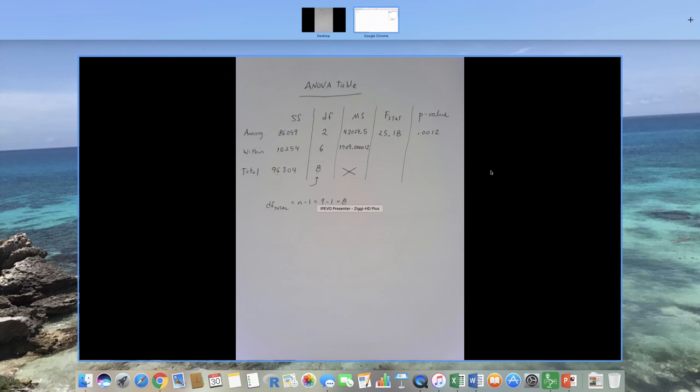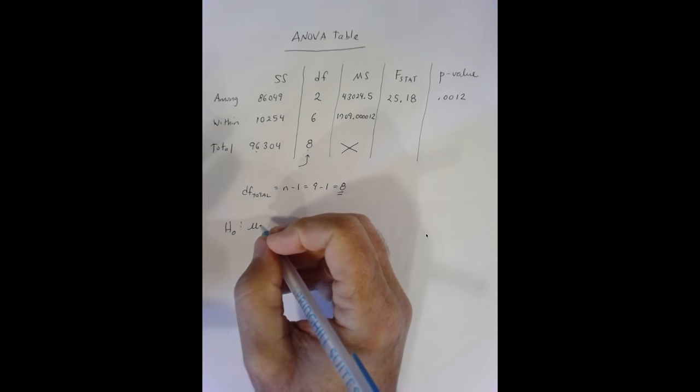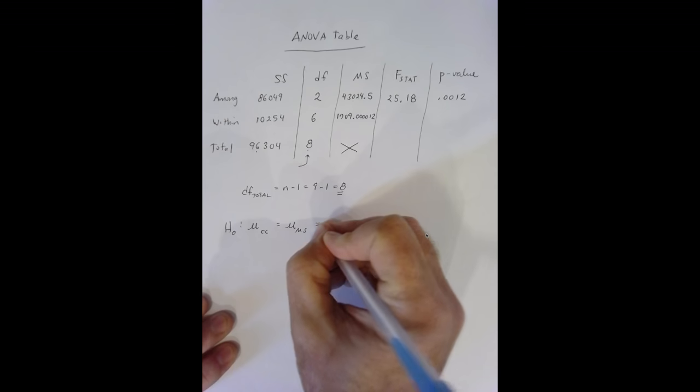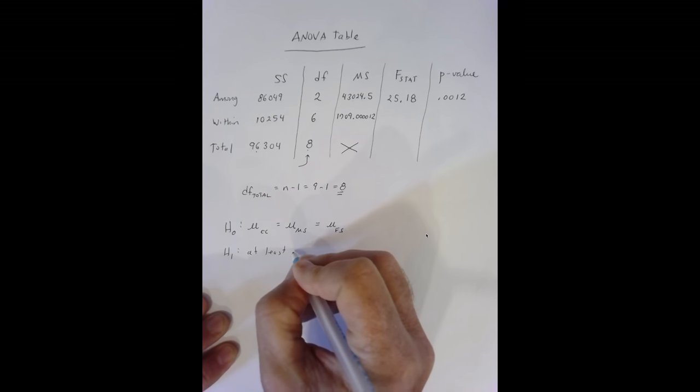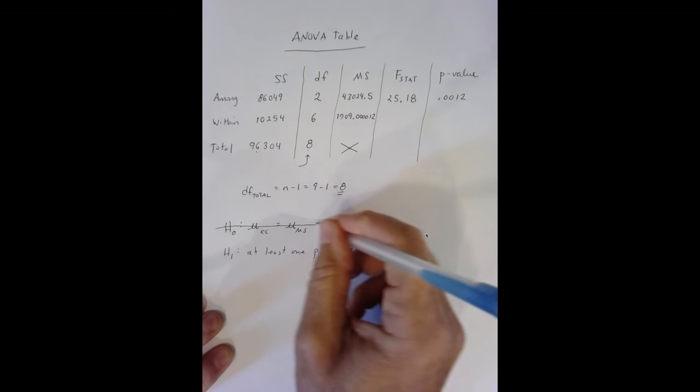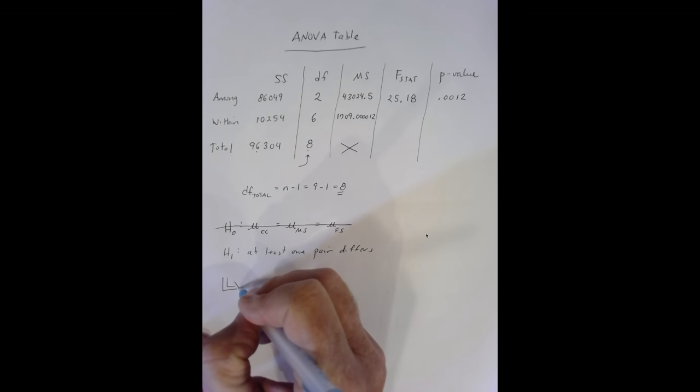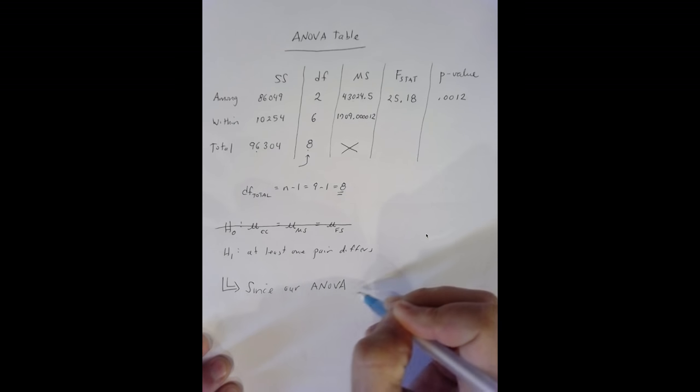This tells me since our null hypothesis here is that the mean for the compact cars is the same as the mean for the midsize which is the mean for the full size. And our H sub 1 is at least one pair differs. We reject the null because our p-value, 0.0012, is less than our alpha, 0.05. At least one of the pairs differs.